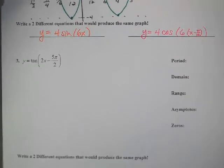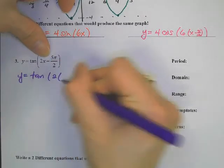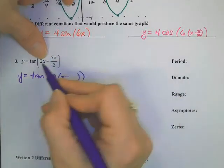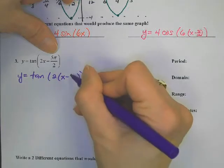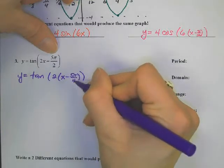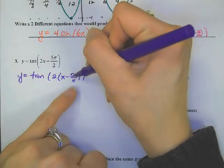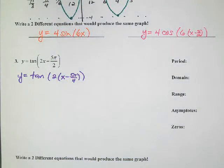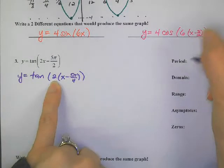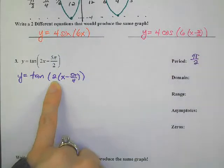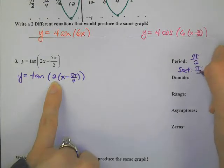The last one is a tangent graph. Let's get it ready by factoring out a 2 — divide by 2, cancel it out, that puts a 2 on the bottom, giving 5π over 4. Let's verify: 2x — good; 2 times 5 is 10 over 4, which is 5 over 2. The period — careful, this is tangent — is just π over B, which is 2. A section for tangent is found by dividing by 2, giving π over 4.